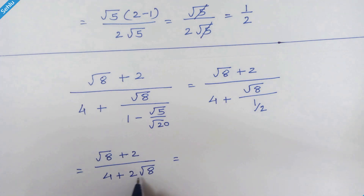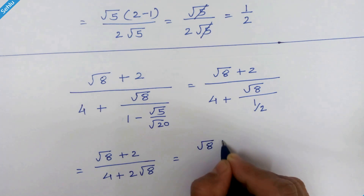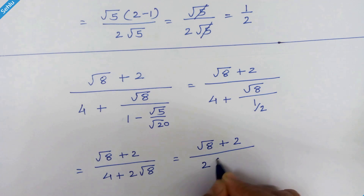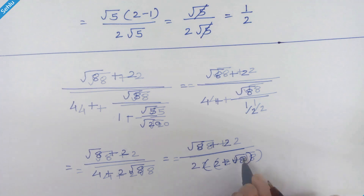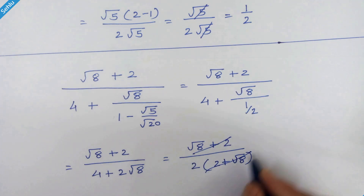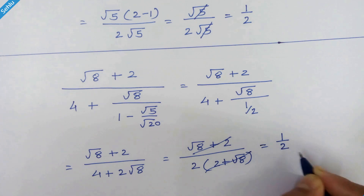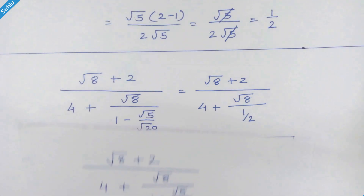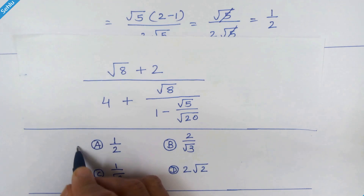Now from here we can factor out 2. So it will be 4 plus 2 upon 2 times (2 plus square root of 8). Now this 2 gets cancelled out. So we have 1 upon 2. That's the answer. So option A is the correct answer.